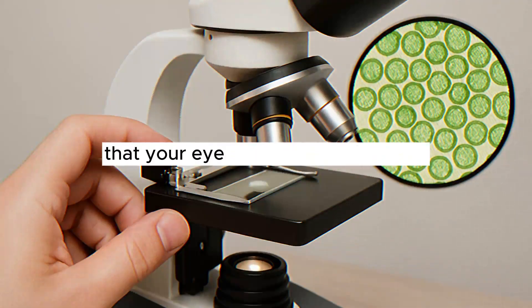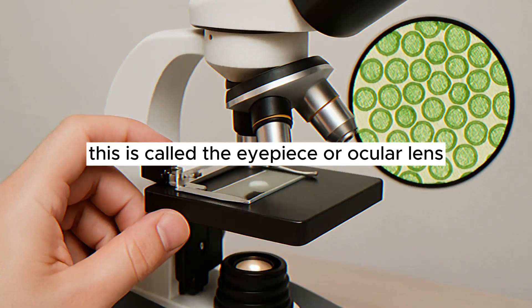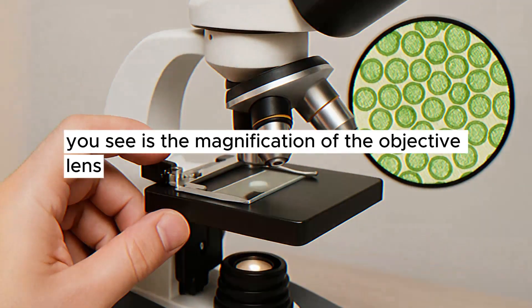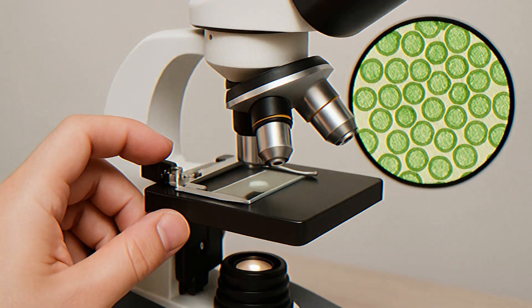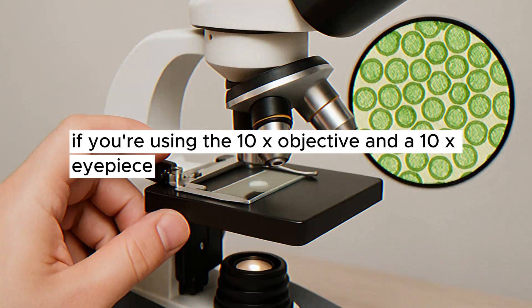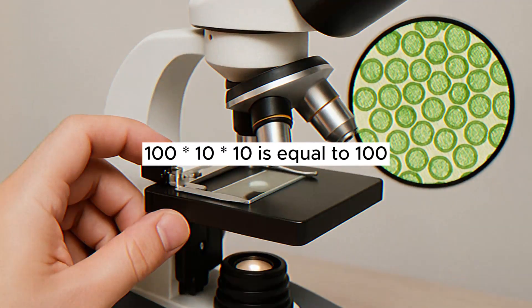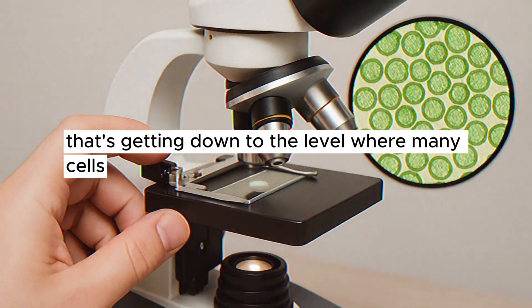Then, there's a second set of lenses that your eye actually looks through. This is called the eyepiece or ocular lens. The eyepiece usually magnifies the image another 10 times. So, the total magnification you see is the magnification of the objective lens multiplied by the magnification of the eyepiece. If you're using the 10x objective and a 10x eyepiece, you're seeing the object magnified 100 times. 10 times 10 equals 100. Switch to the 40x objective, and now you're at 400x magnification. That's getting down to the level where many cells become visible.